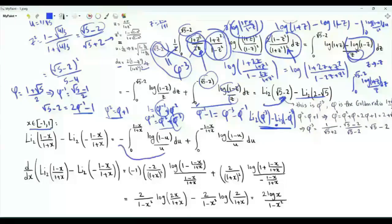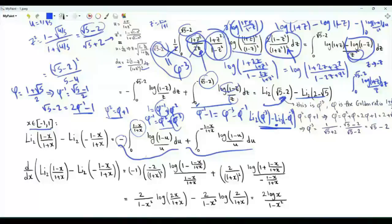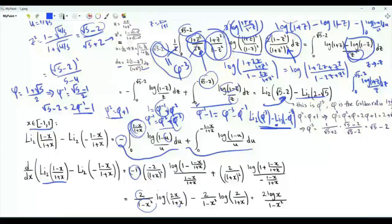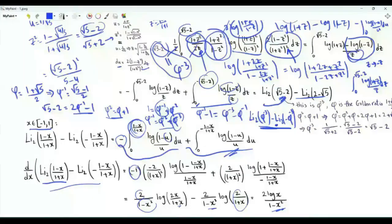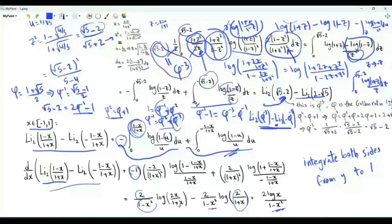Consider x between −1 and 1. We look at Li₂((1−x)/(1+x)) minus Li₂(−(1−x)/(1+x)). We differentiate both sides with respect to x. On the right-hand side, applying differentiation under the integral sign, the derivative of (1−x)/(1+x) is −2/(1+x)², so the derivative of the first dilogarithm term is 2 log((1+x)/(2x/(1+x))) · 2/(1−x²), simplified to give derivative of the difference equal to 2 log x / (1−x²). We then integrate both sides from y to 1, noting that the difference of dilogarithms equals zero when x = 1 (since Li₂(0) = 0).